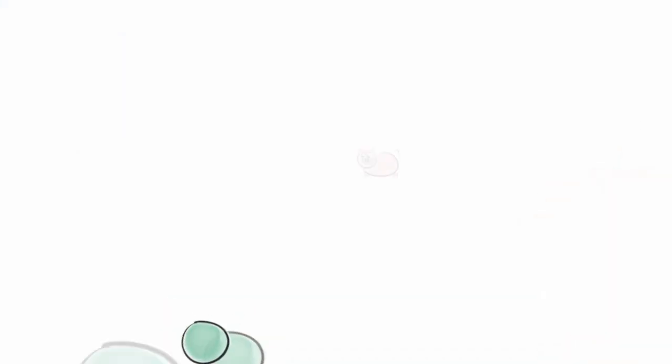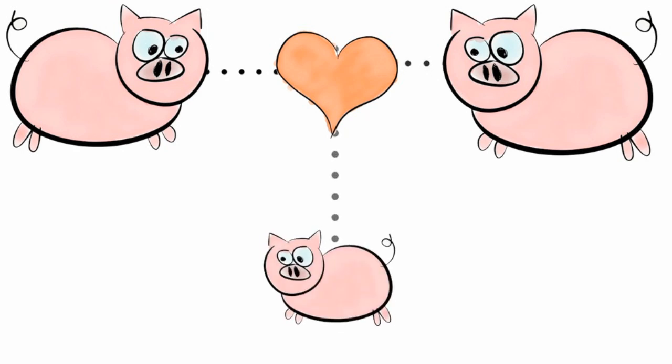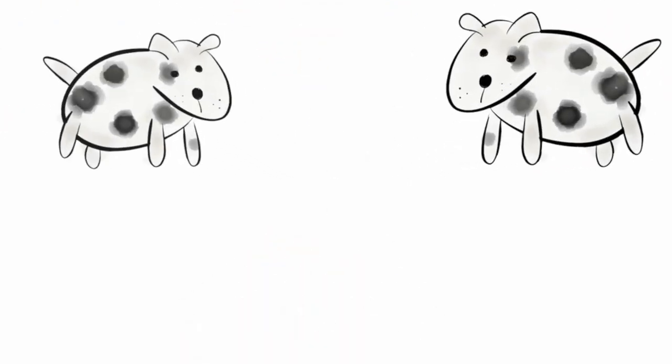No matter how the egg is fertilized, the offspring gets some genes from each parent. Sexually reproduced offspring are not identical to either.